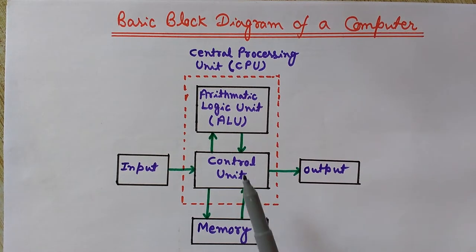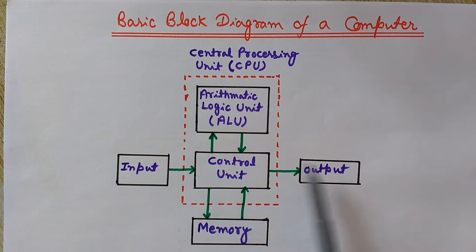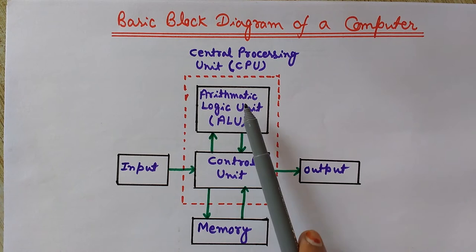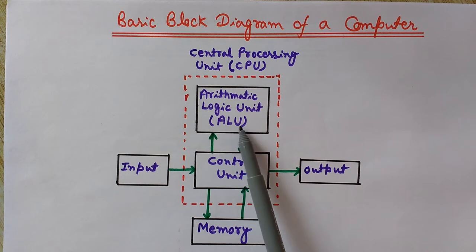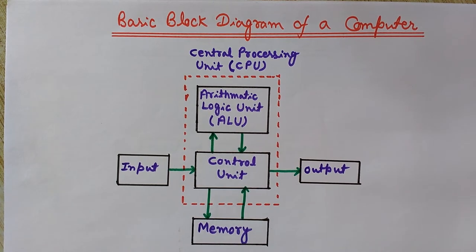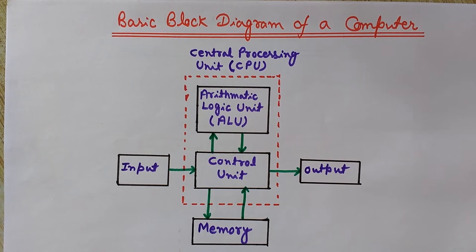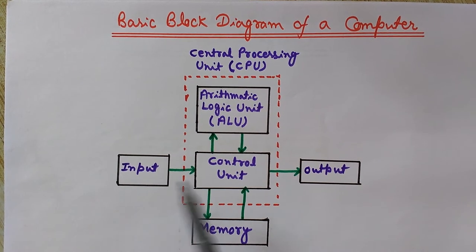Starting with the block diagram of a traditional computer, it has mainly three components: the Central Processing Unit, known as CPU; the memory; and input and output devices. The CPU contains two components inside it — the Arithmetic Logic Unit, ALU in short, and the Control Unit. We will discuss each of these components in some detail.